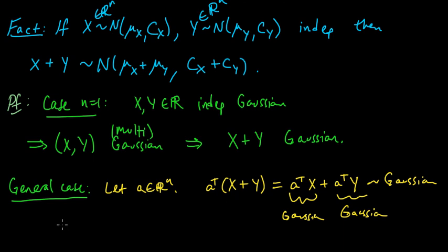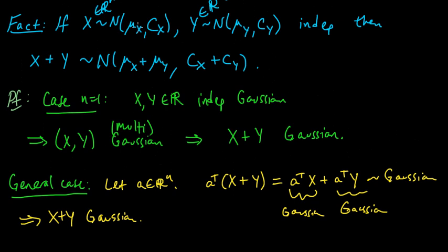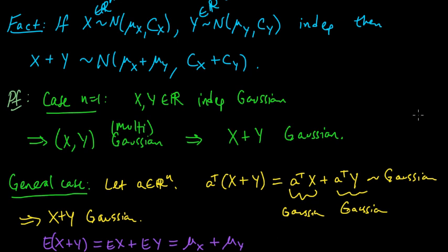So this implies X plus Y is multivariate Gaussian, and we just need to verify the mean and covariance. The mean is straightforward: the expected value of X plus Y equals the expected value of X plus the expected value of Y, which is μx plus μy. That's just what the mean means, so that verifies the mean.